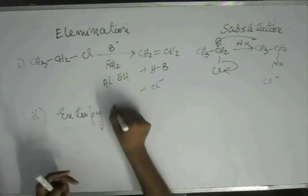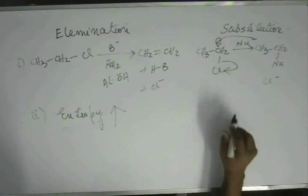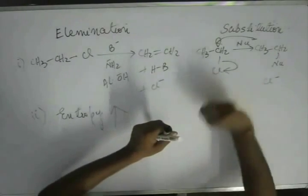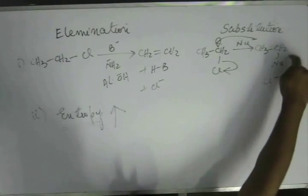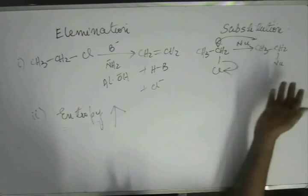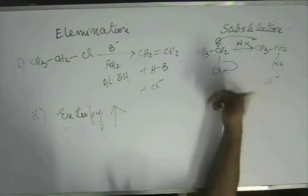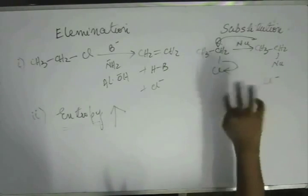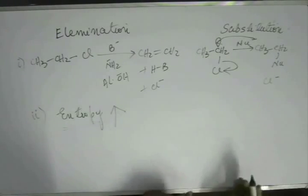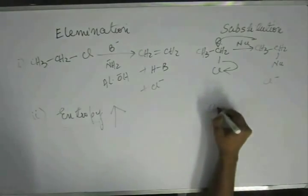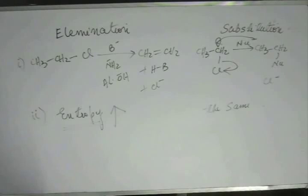In the case of substitution, before the reaction you had the substrate and the nucleophile — two species. Once the reaction is over, you have the product and the negatively charged leaving group moving out — again two species. The number does not increase, so not much entropy will change; it will be almost the same. This is very important: entropy increases in elimination, but entropy remains essentially the same in substitution.